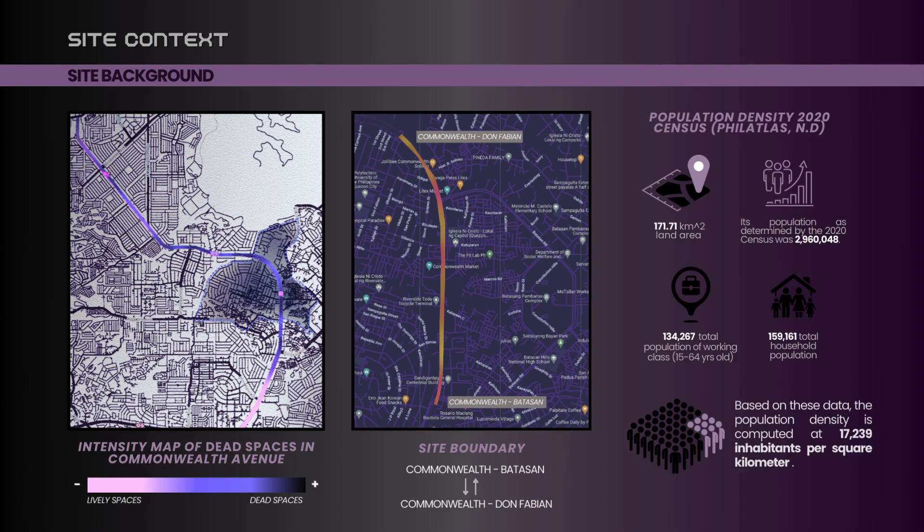Since Commonwealth is a long stretch, we will be focusing on the boundaries of District 2, which is from Commonwealth Batasan to Commonwealth Don Fabian. According to data based on 2020, Commonwealth has a land area of 171 square kilometers with a population of 2,096,000, giving a population density of around 17,000 inhabitants per square kilometer.